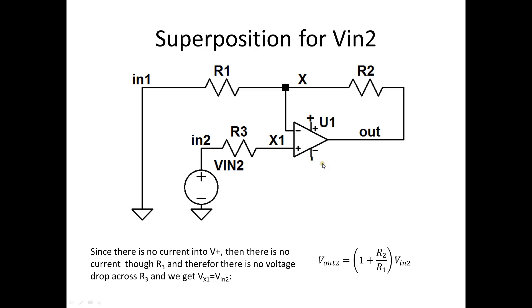Now, what about Vin2? Well, there's no current into this pin in the ideal op-amp case, so there can be no voltage drop across R3. And so, in fact, the voltage at x1 is equal to the voltage at the input 2 here. And then that leads us right back to our non-inverting gain. Vout equals 1 plus R2 divided by R1 times Vin.